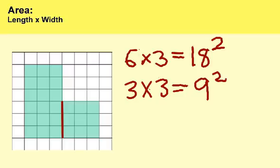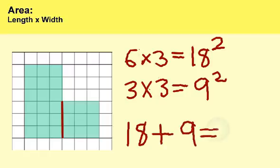We figured out the areas of both portions. Now we're going to add them. So we have 18 plus nine, which is equal to 27 square units. The total area of this irregular shape is 27 square units.